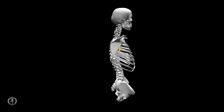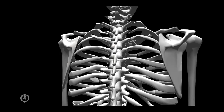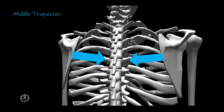First, we have scapular protraction, which is a force vector caused by the serratus anterior. Next, we have scapular retraction. Scapular retraction is caused by a force vector created by the middle trapezius, the rhomboids, and the lower trapezius.